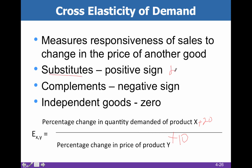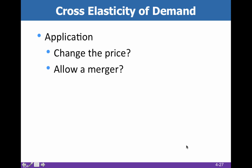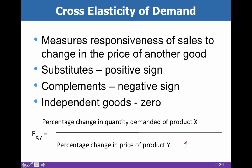The higher the number, the closer the substitute. A perfect substitute would be one where an increase of 1% in price gives you a change of 100% in quantity demanded. For complements, when the price of peanut butter goes up 10% and the quantity demanded of jelly goes down 20%, you get a negative 2 — that negative sign tells us they are complements. Again, the higher the absolute number, the more complementary the two goods are.